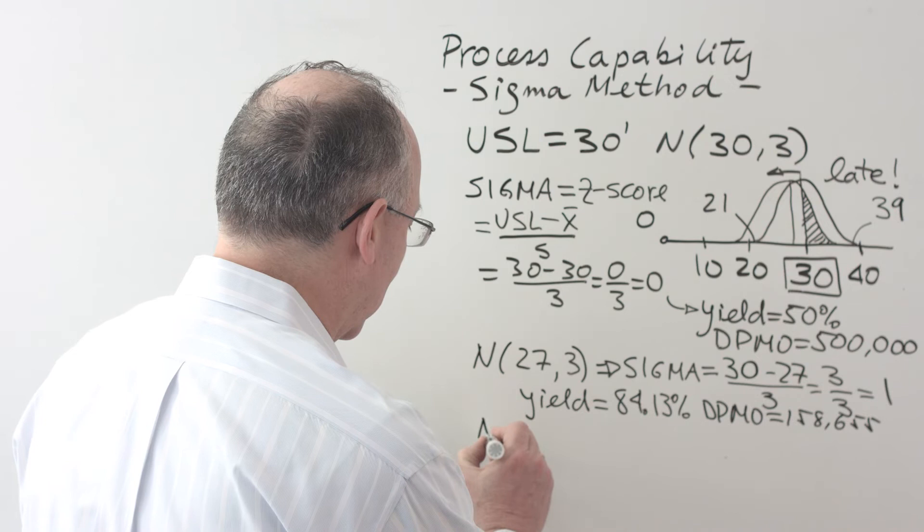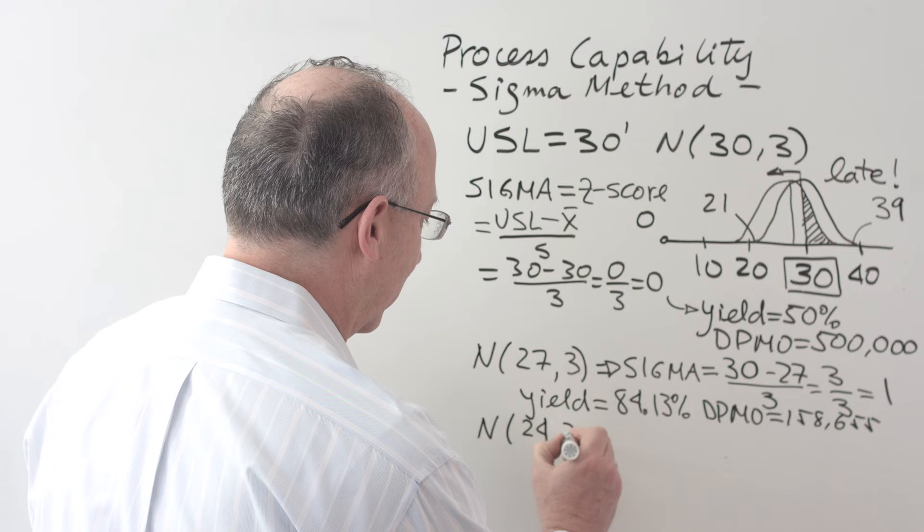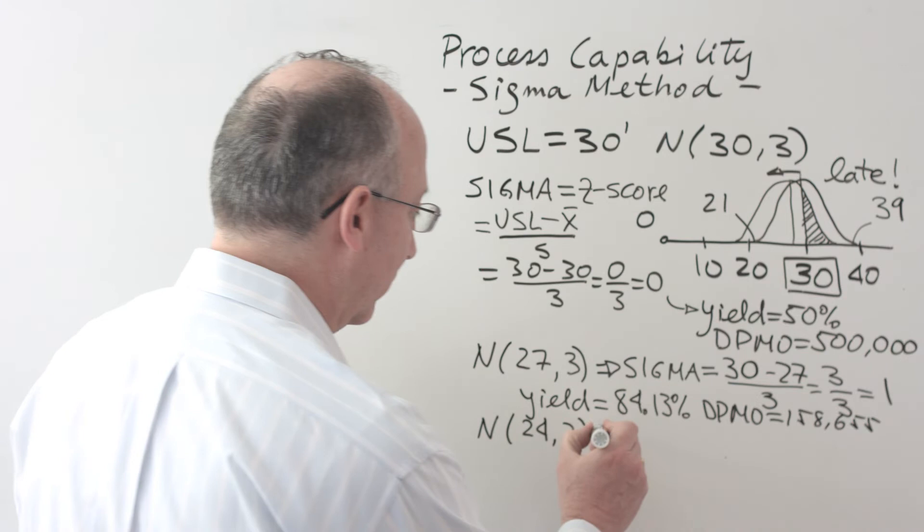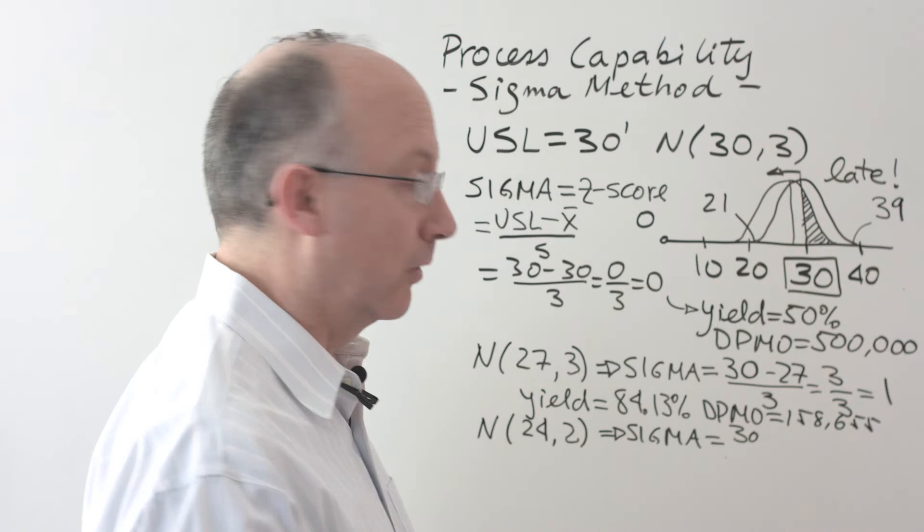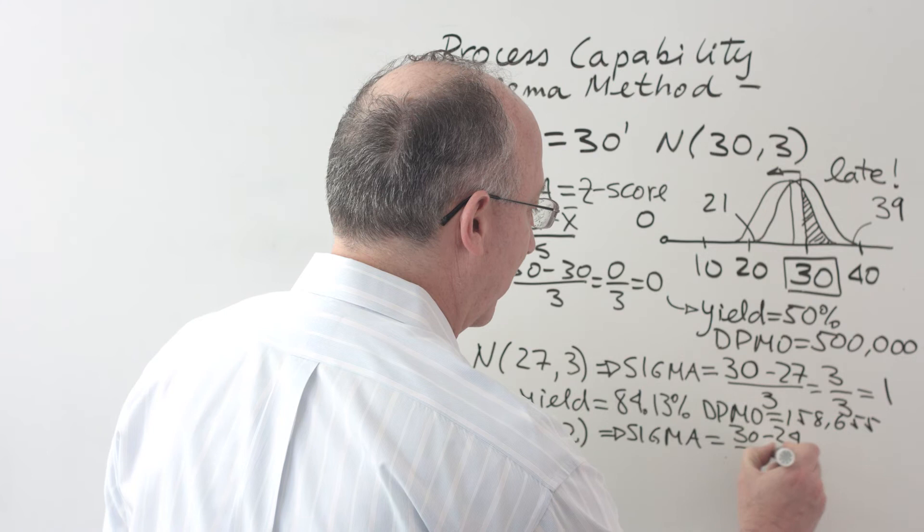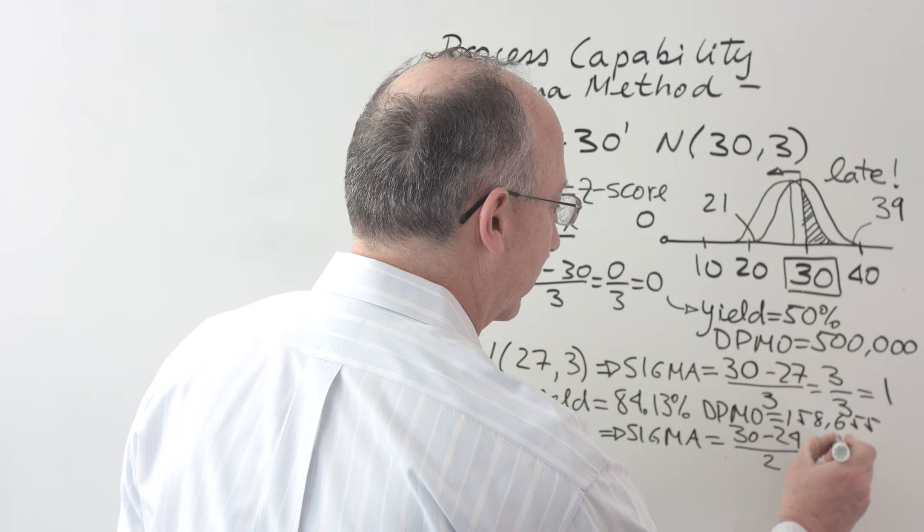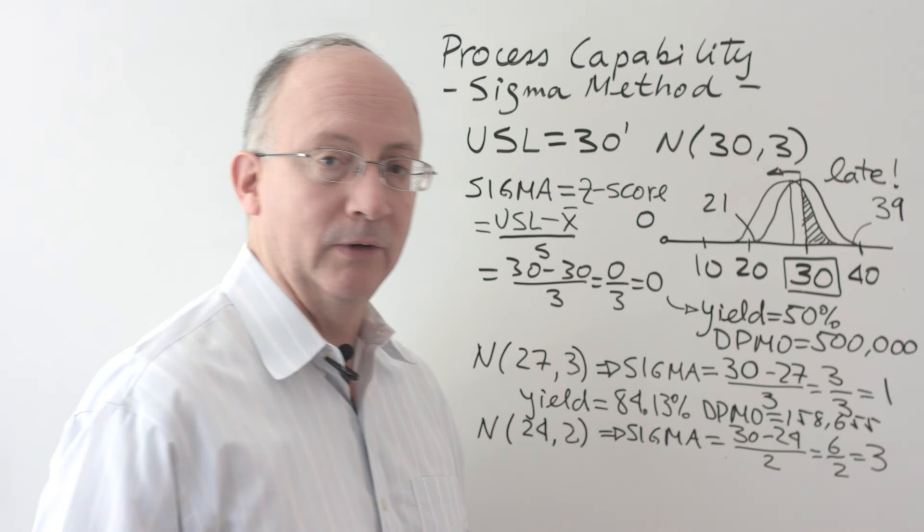Let's say that we're able to turn this to a normal distribution that has an average of 24 minutes and a standard deviation of 2 minutes. If this were the case, now we would have a sigma value which is going to be substantially better, where the 30 minutes still stays the same minus the 24 minutes of the average divided by the standard deviation. This is going to give us 6 divided by 2. And so now we find ourselves operating at a sigma level of 3, which is substantially better than anything that we had before.